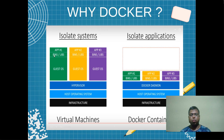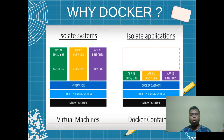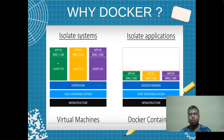In each guest OS we have the bins and dependent libraries, and on top of that I install the respective apps. So this is the structure of a virtual machine. If each operating system is consuming one GB, then for three apps — one into three — that is three gigabytes of storage I need to maintain in this particular architecture.